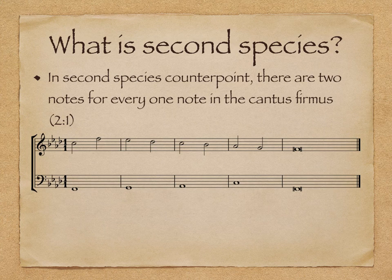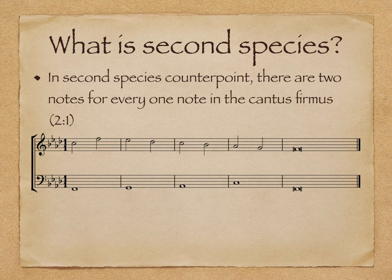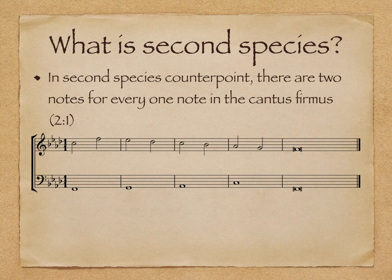What is second species? In second species, there are two notes for every one note in the cantus firmus. Just like in the example below, the upper voice has two notes per the one of the cantus firmus in the lower voice. These voices could also be flipped around, with the cantus firmus in the upper voice and the two-to-one in the lower voice.